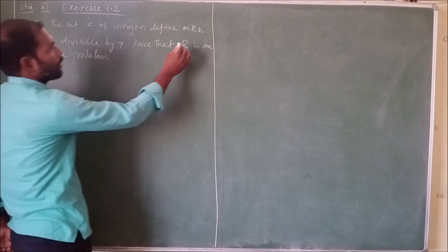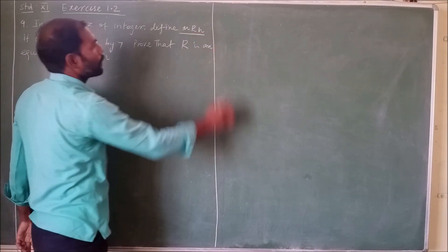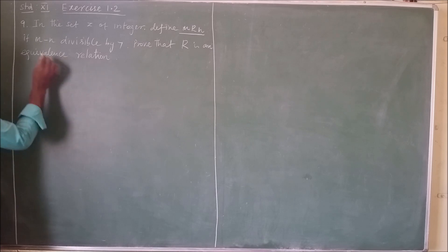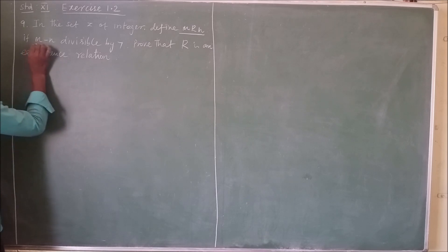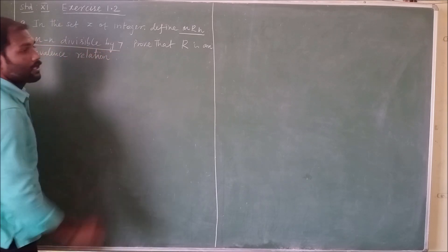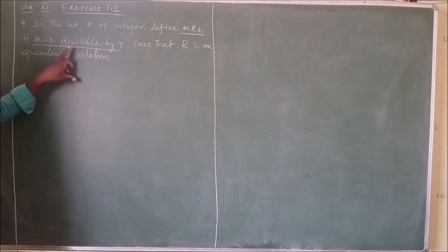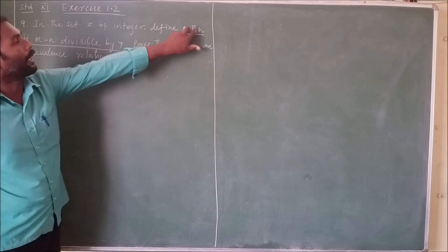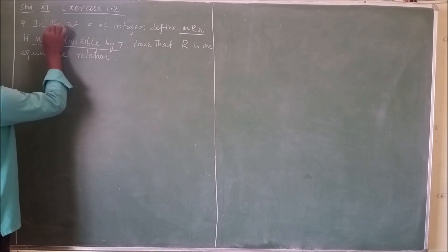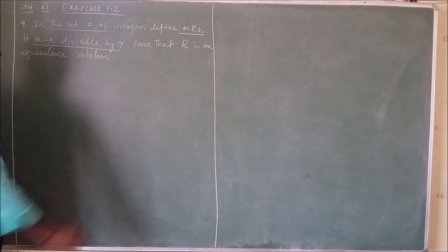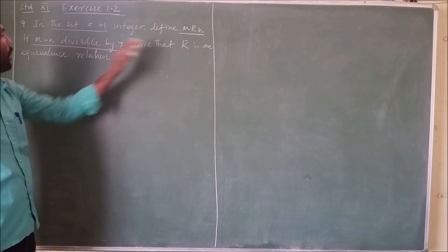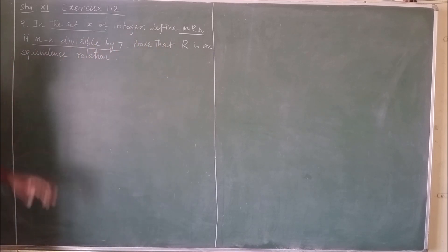So what is the relation? The relation is m related to n, with the condition that m minus n is divisible by 7, where m and n are from the set of all integers Z. We need to prove that R is an equivalence relation.